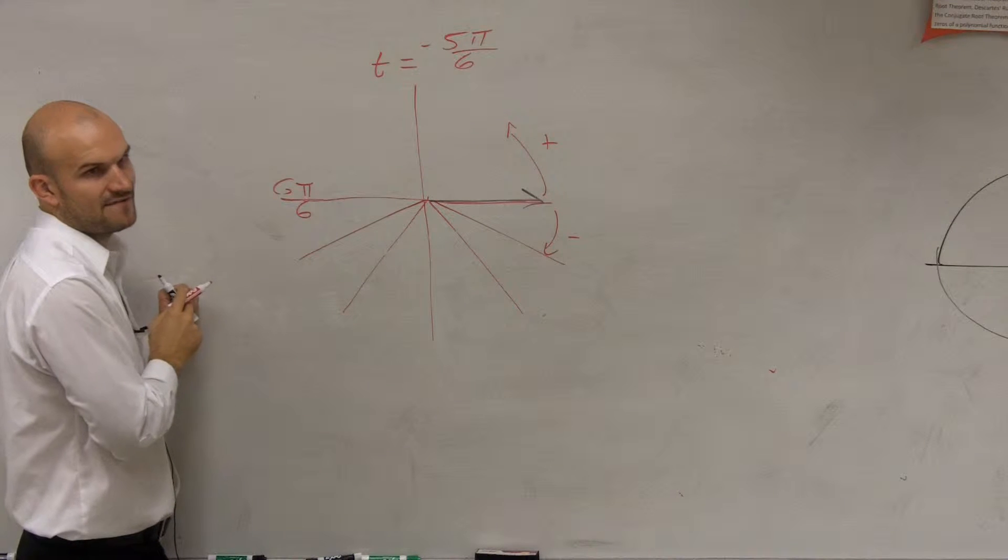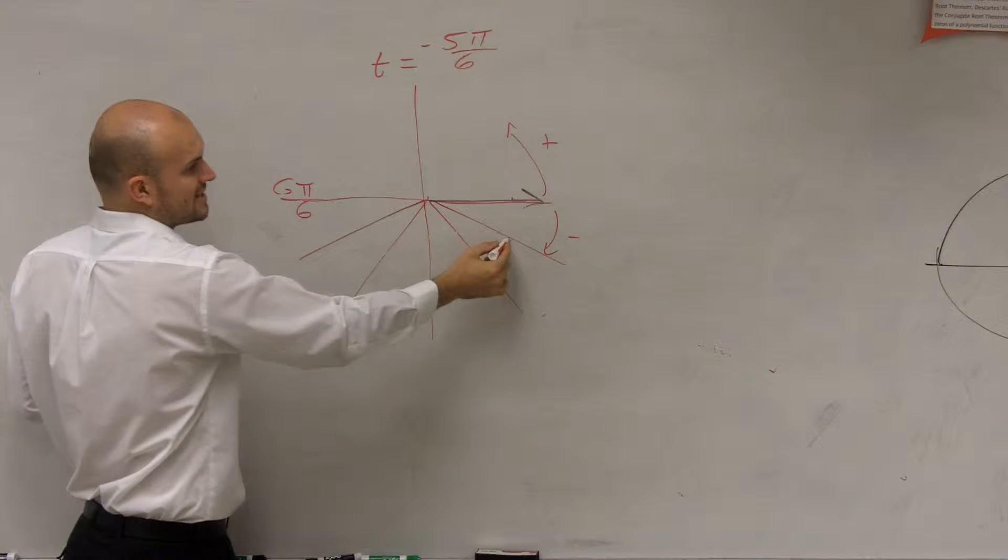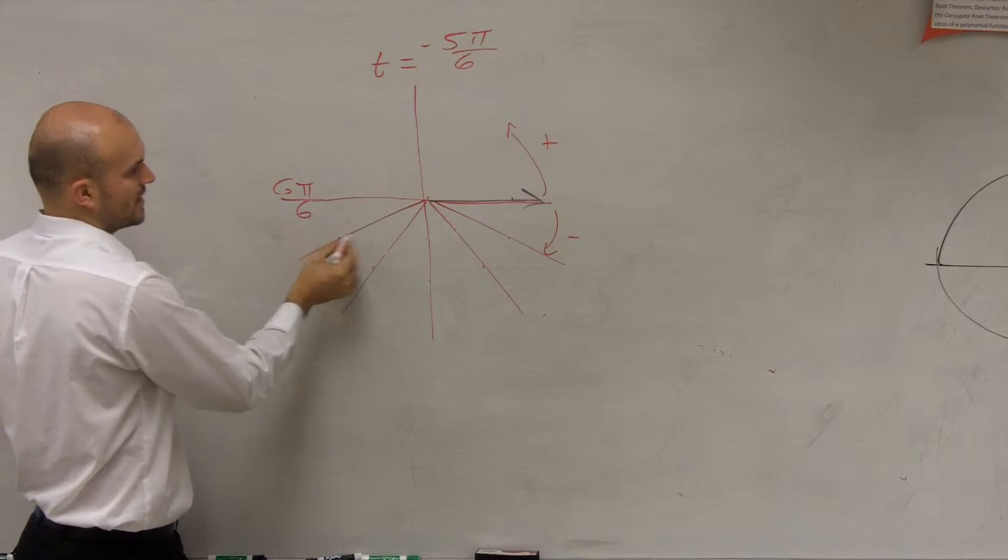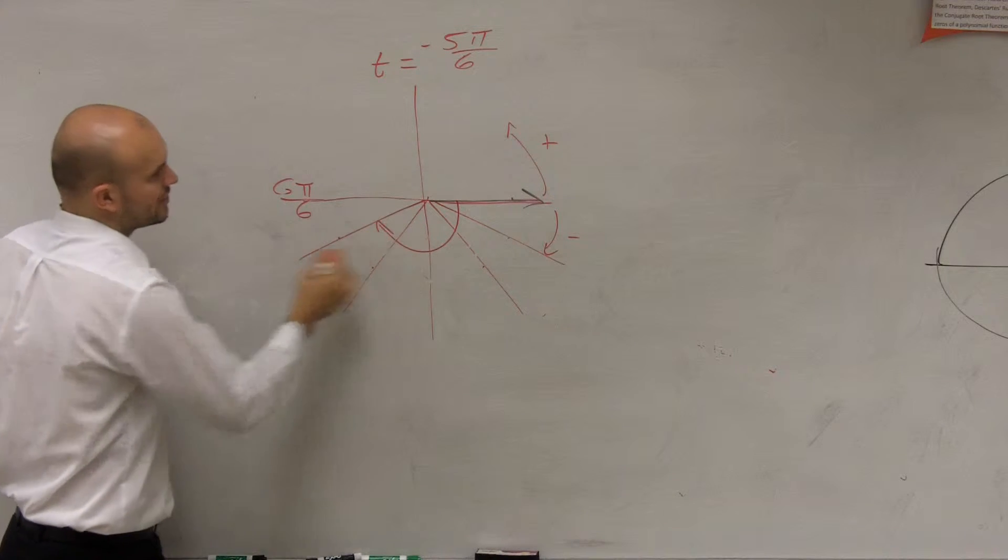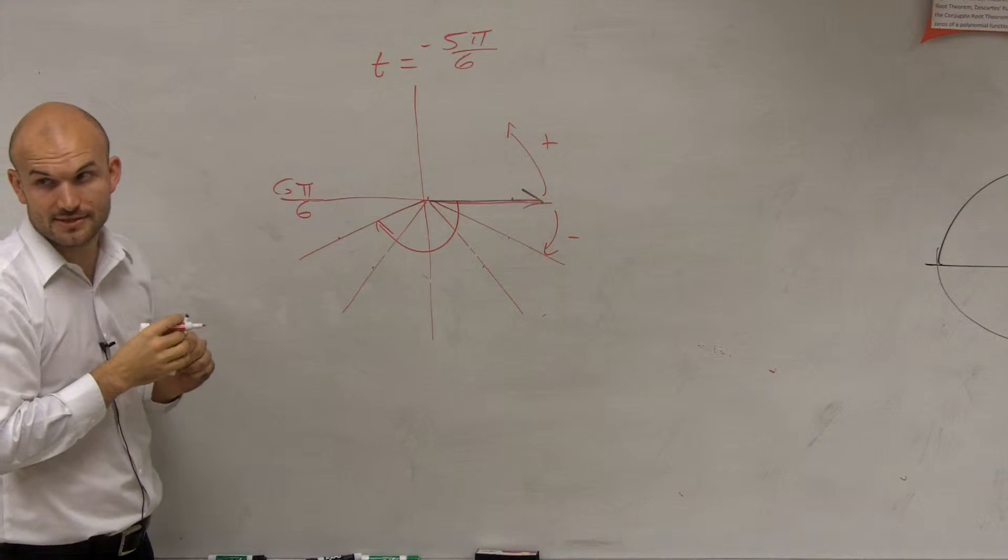So I want to figure out what negative 5 pi over 6 is. So that's negative 1, negative 2, negative 3, negative 4, negative 5. Meaning my angle looks just like that.